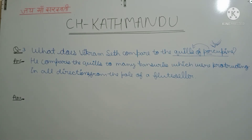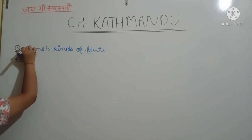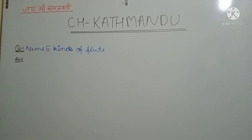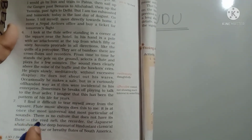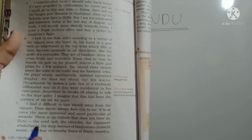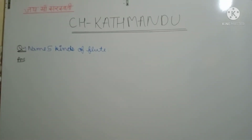Our next question is our fourth question: can you find the names of five kinds of flutes? You can find this on page number 130. There are different kinds of flutes mentioned there.